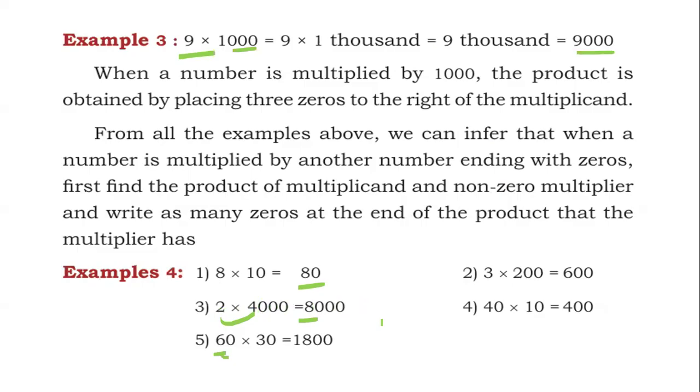Similarly, 60 into 30 is 1800. Keep the right hand side zero. 3 into 200 is 600.